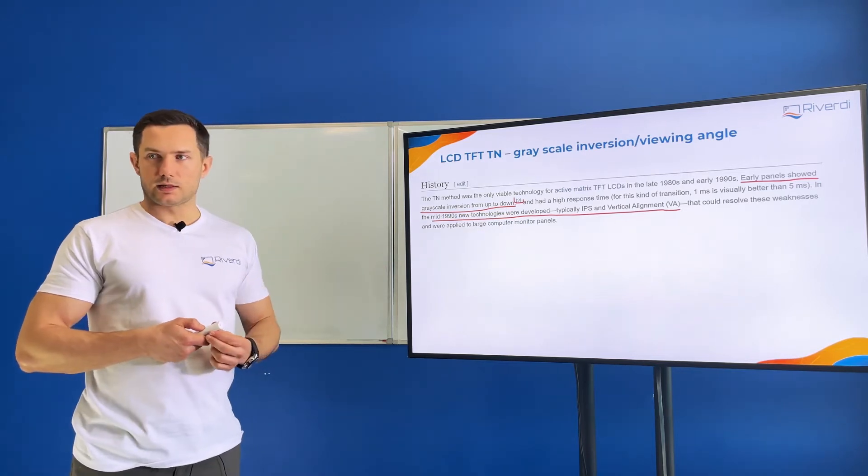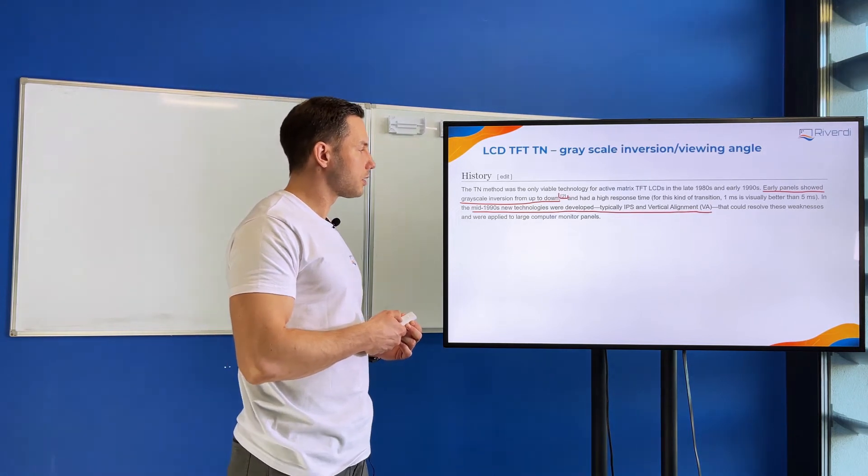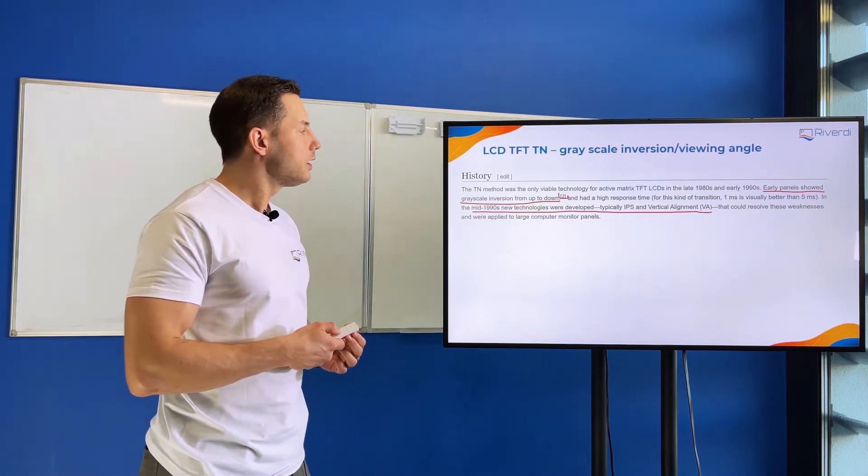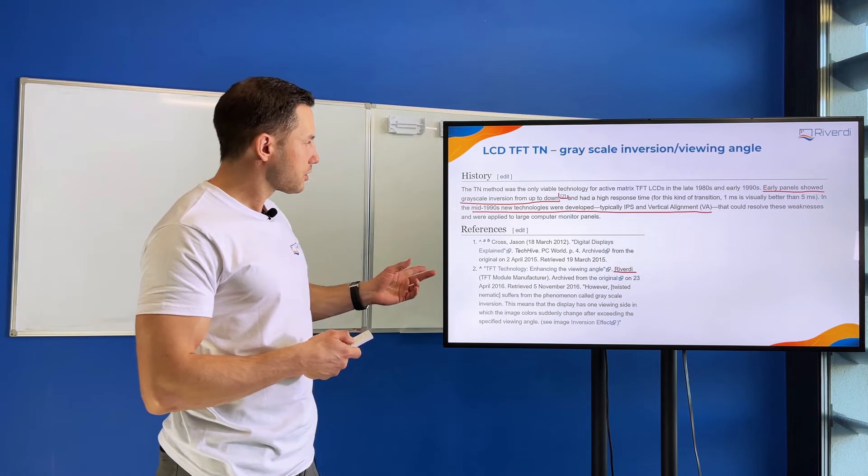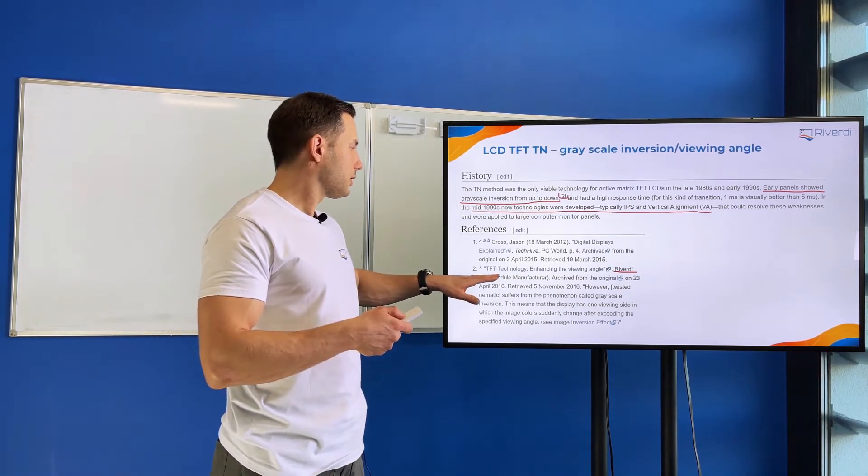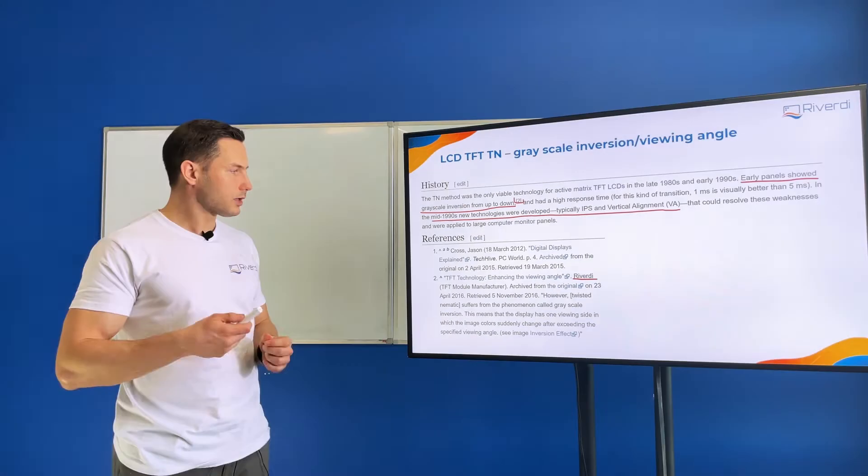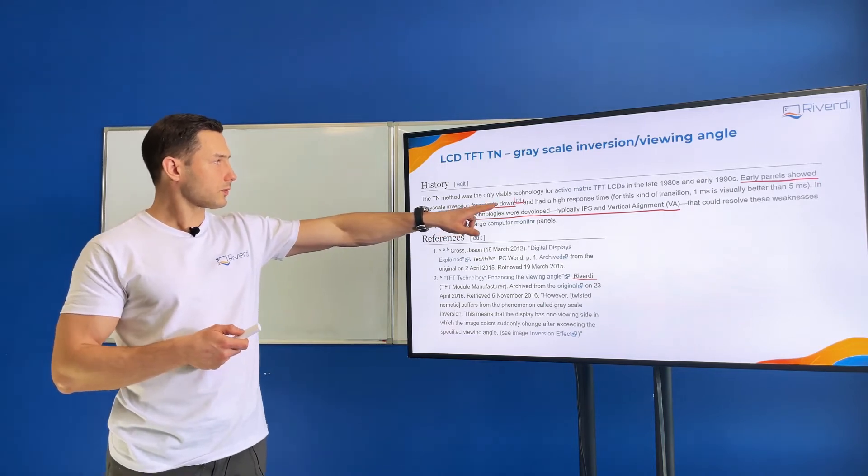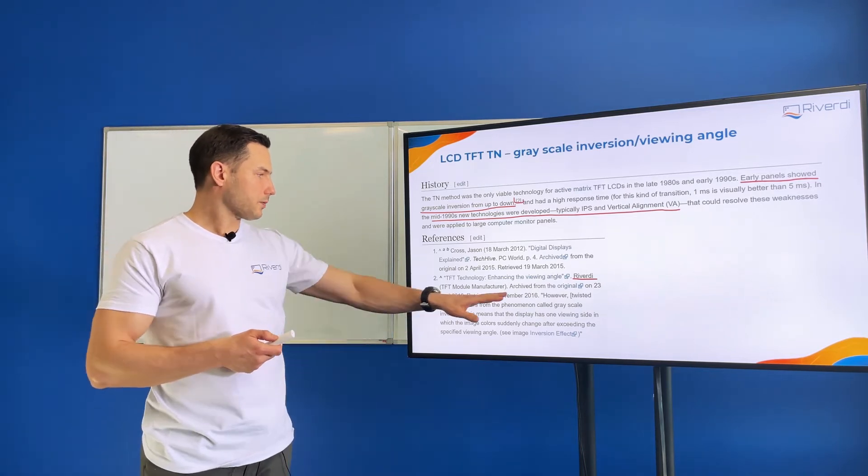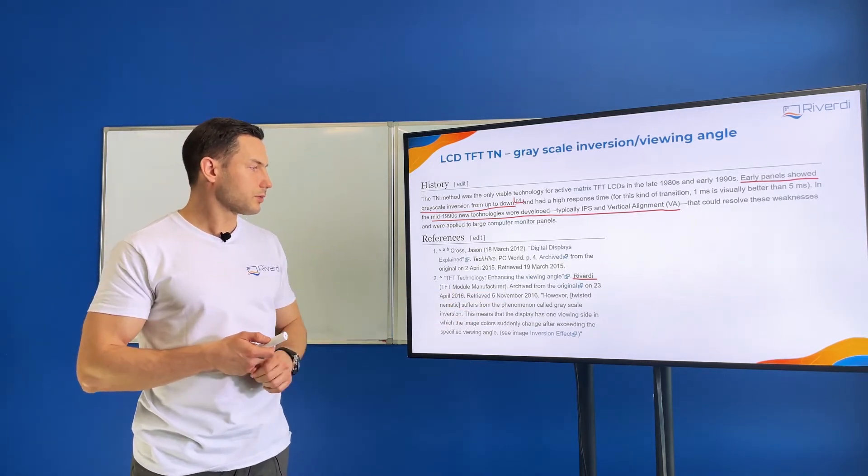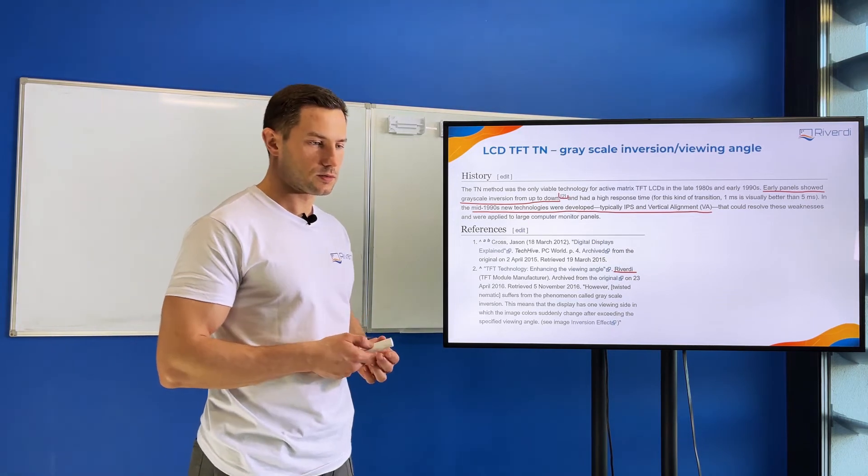That's why technologies like IPS (in-plane switching), which we use in the latest Riverdy displays, or VA, were developed to avoid this phenomenon. Interestingly, the Wikipedia explanation comes from Riverdy. The twisted nematic display suffers from a phenomenon called grayscale inversion, meaning the display has one viewing side where the image color suddenly changes.